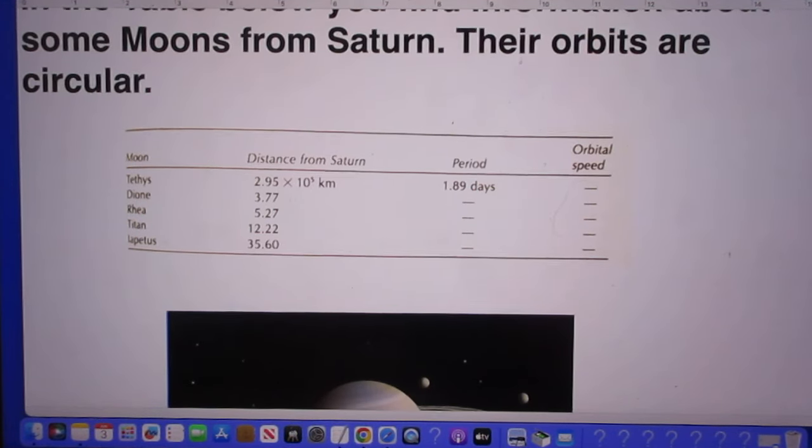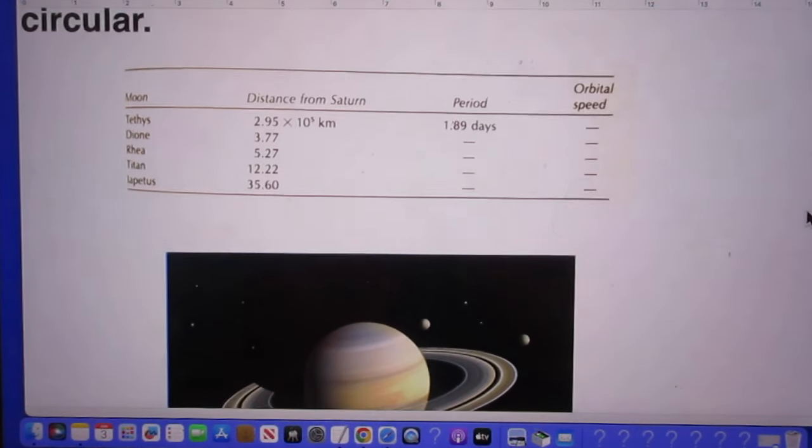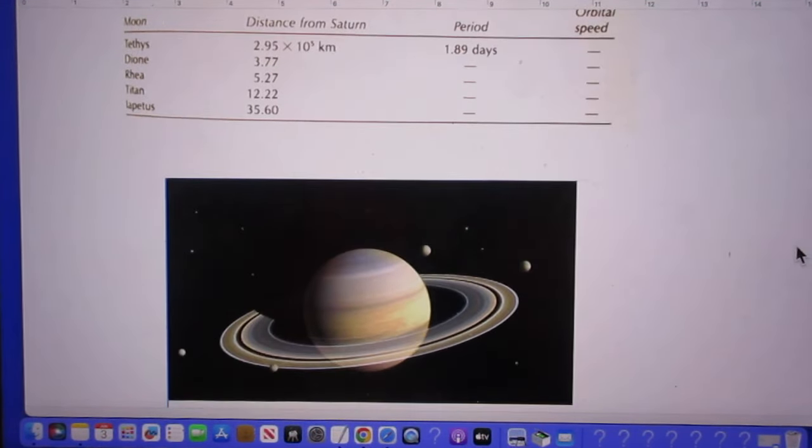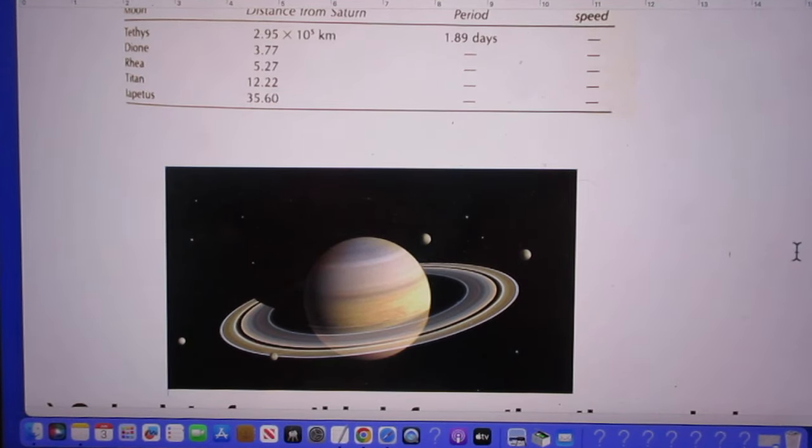So what you see there is the only information that you're being given. And here you see a picture of Saturn and you see also four of the largest moons.